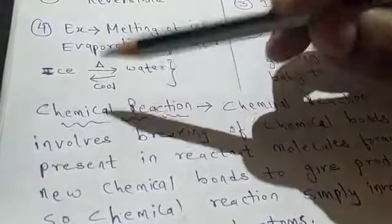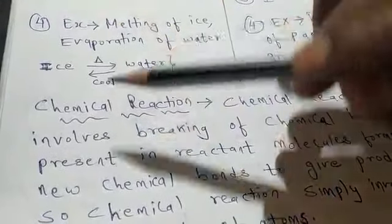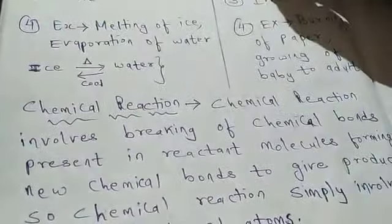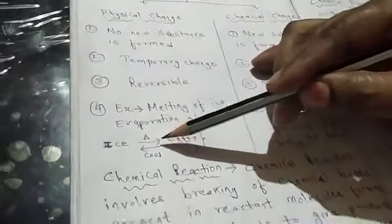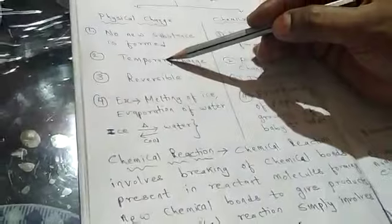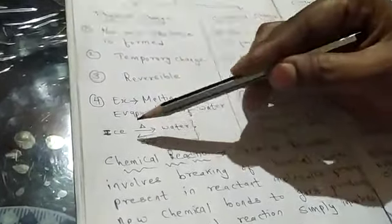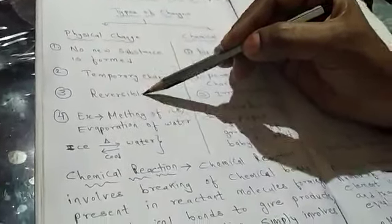Is there any new substance formed here in this change? No. So, in a physical change, no new substance is formed. It is temporary or permanent change? It is temporary change. Because when you reverse the condition, you get back the original substance. And next, third thing, it is reversible.